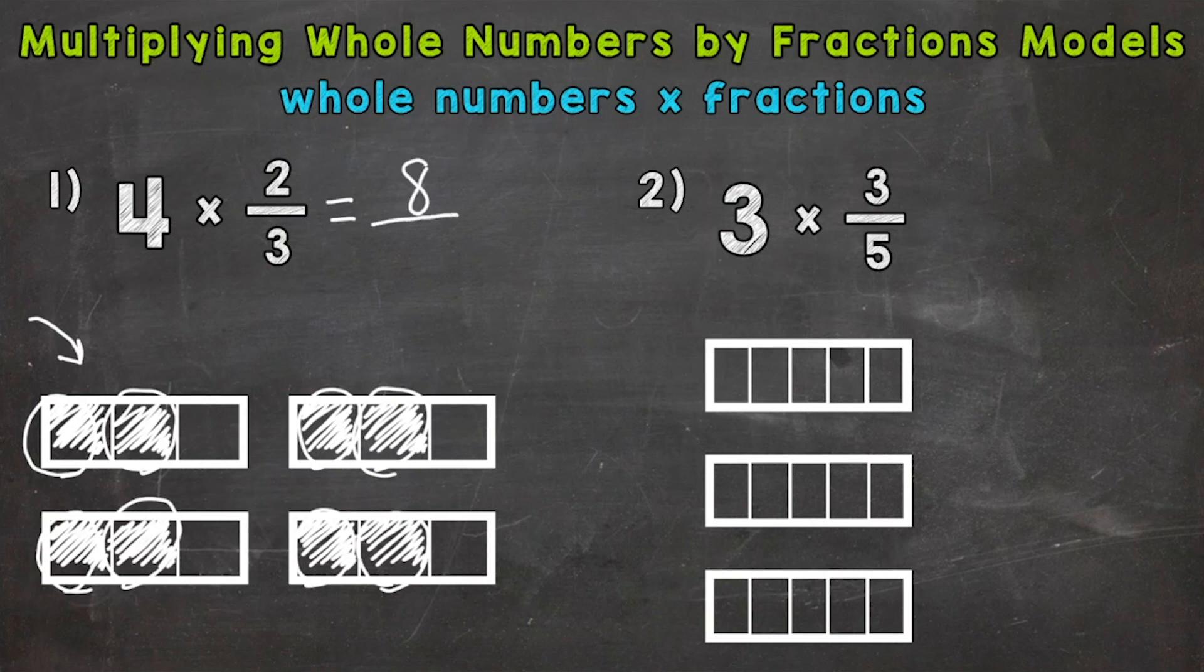And our denominator, everything's cut into thirds. So that's going to be our denominator, three. That's our answer, eight-thirds. But it's an improper fraction. So let's convert it to a mixed number here.